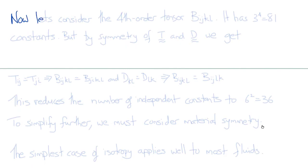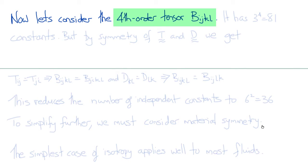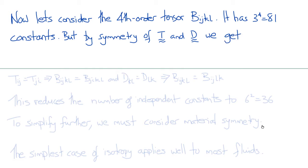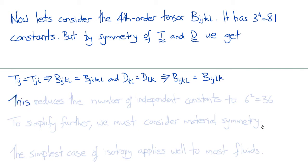Now let's turn our attention to the fourth-order tensor B_ijkl. Since we have assumed that the relationship between the stress tensor and the rate of deformation tensor is linear, the components of B_ijkl are constant, but there are 3 to the power of 4 of them — meaning there are 81 constants. Considering the symmetry of the stress tensor T and the rate of deformation tensor D, we can write that T_ij equals T_ji, which means B_ijkl equals B_jikl. Similarly, from the symmetry of D, B_ijkl equals B_ijlk. This reduces the number of independent constants from 81 to 36.